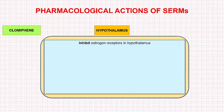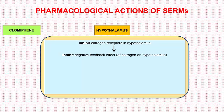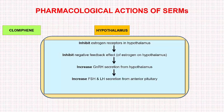Moving to the next drug, Clomiphene. Clomiphene mainly inhibits the oestrogen receptors in the hypothalamus. Since Clomiphene blocks these receptors, oestrogen cannot act on them, which blocks the negative feedback effect of oestrogen on the hypothalamus. The hypothalamus then senses a deficiency of oestrogen and starts releasing more gonadotropin-releasing hormone, i.e. GnRH. This GnRH acts on the pituitary to increase the secretion of gonadotropins — FSH (follicle-stimulating hormone) and LH (luteinizing hormone) — which act on the ovary to cause ovarian stimulation and result in ovulation.